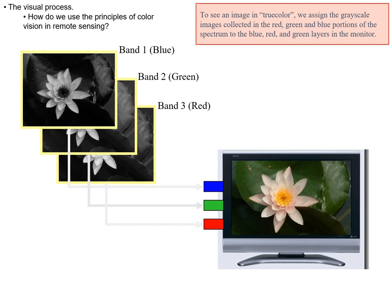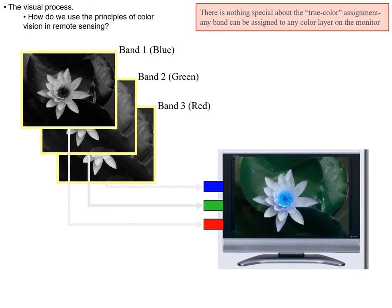Stacking the three bands — blue, green, and red grayscale images — there are arrows connecting each band to a monitor. In this case, the blue band is assigned to the blue display color, the green band is displayed as green, and the red band is displayed as red. This is a true color display — it reproduces the original visible appearance of an image.